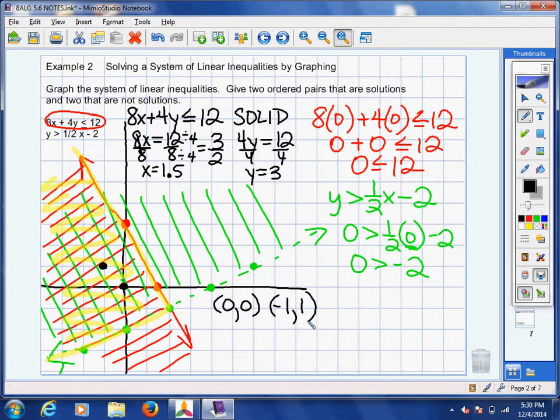Wherever you see the highlighter, those are potential answers. The only exception would be any points that are on the green line. They don't work. Points on the red line do work. Points on the green line do not because it's dashed.